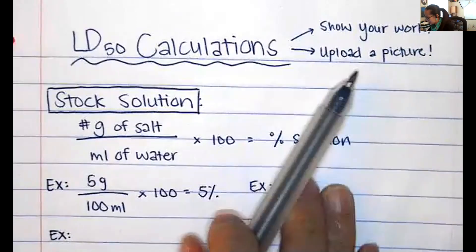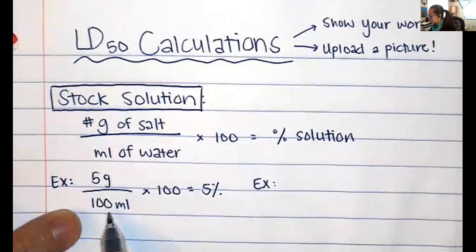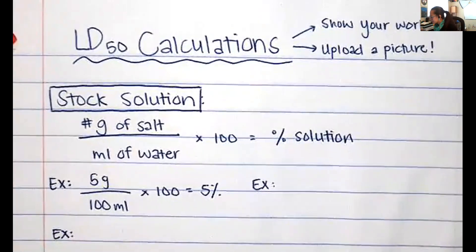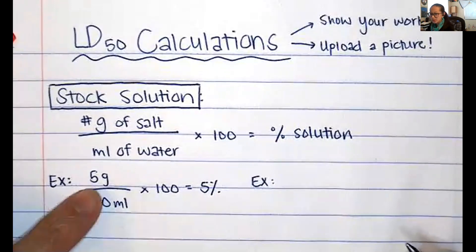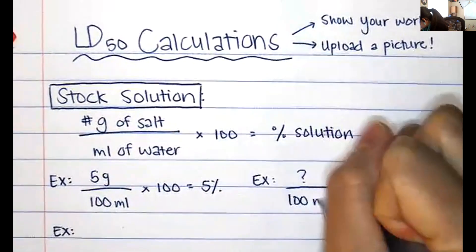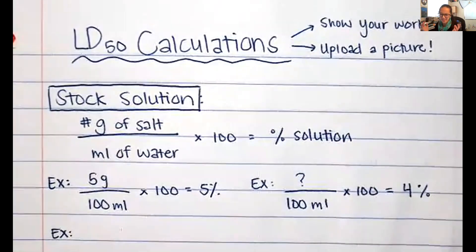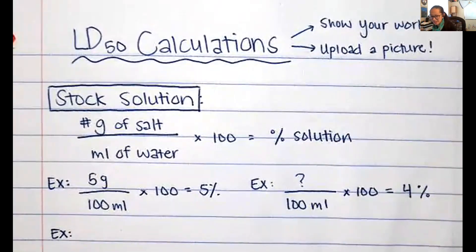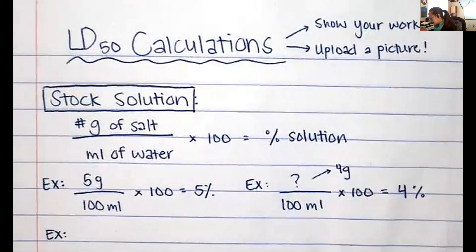Make sure you show your work and upload a picture. Let's calculate our stock solution. Here's the example: 5 divided by 100 times 100 equals 5%. Now let's say we have a percent in mind — say I want a 4% solution. What I'm searching for is the number of grams I need. I want to make 100 milliliters, and I want 4%. Working backwards, with 100 milliliters, this simplifies to 4 grams.